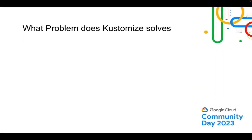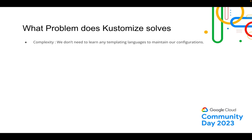What problems does Kustomize solve? First: complexity. You don't need to learn any templating language to maintain your configuration. With Helm, whenever a new person dives into Kubernetes, they have to deal with values.yaml and chart.yaml files — the complexity increases with multiple YAML files. The best thing about Kustomize is you don't have to learn any templating. If you're familiar with YAML configuration, you can use Kustomize. Another benefit is multi-environment deployment — easy to deploy across stage, prod, and QA environments.